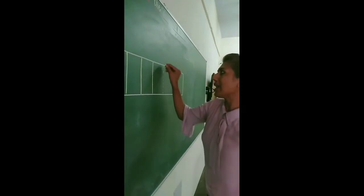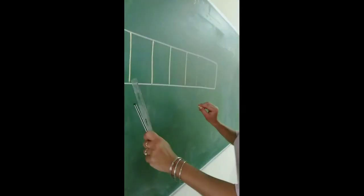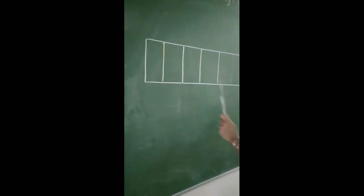What are these lines called? Standing lines. Start from top to bottom and left to right.